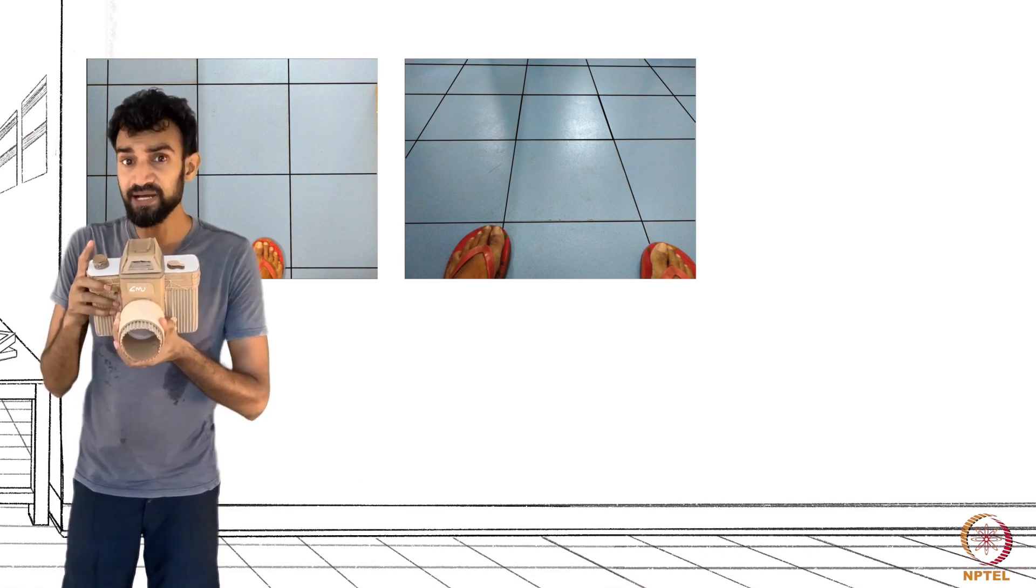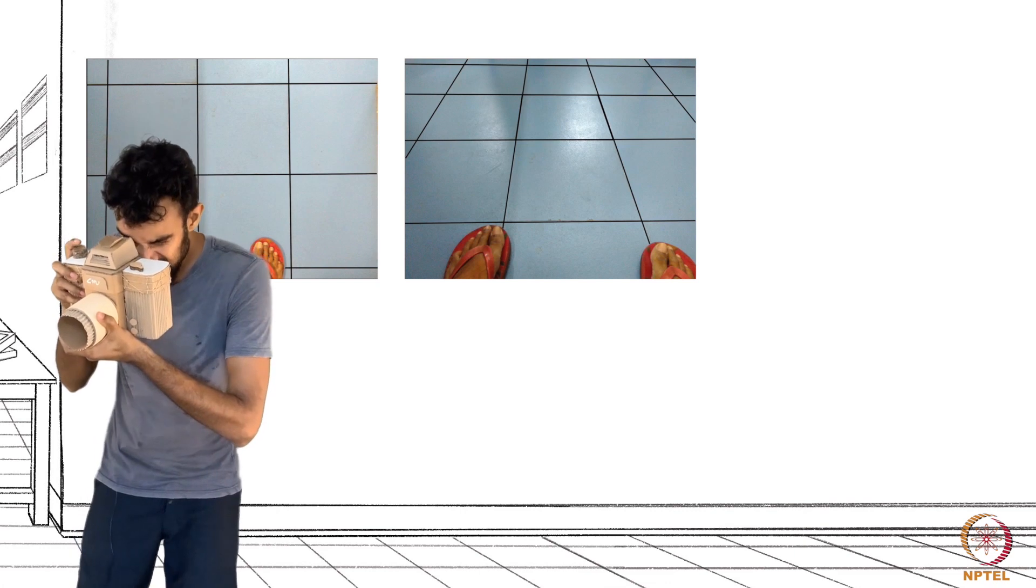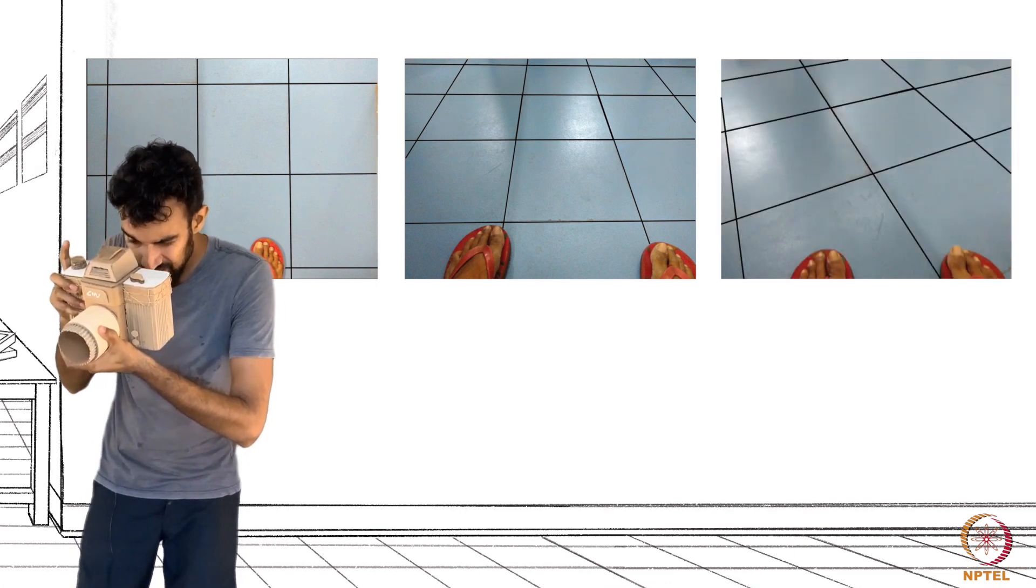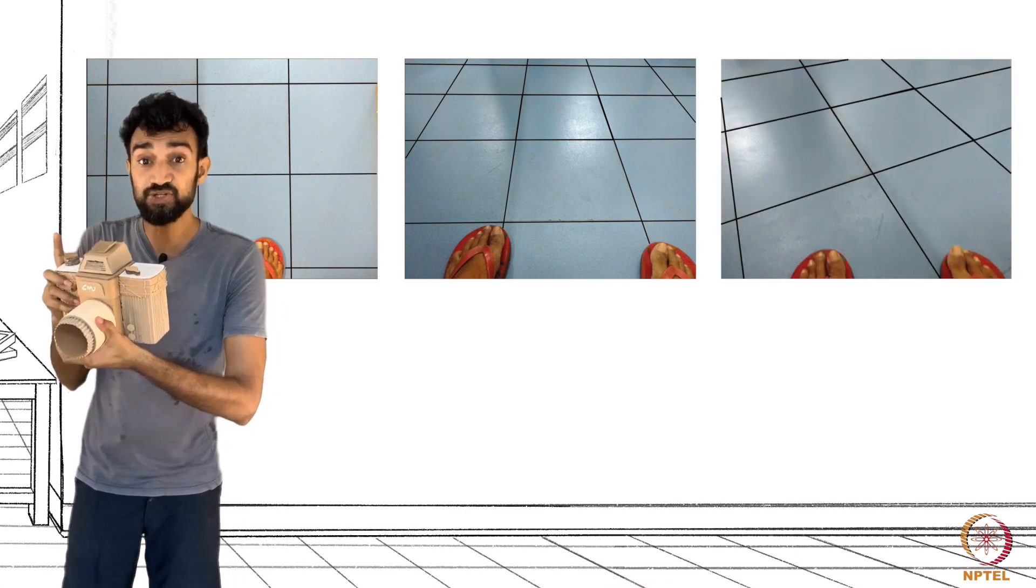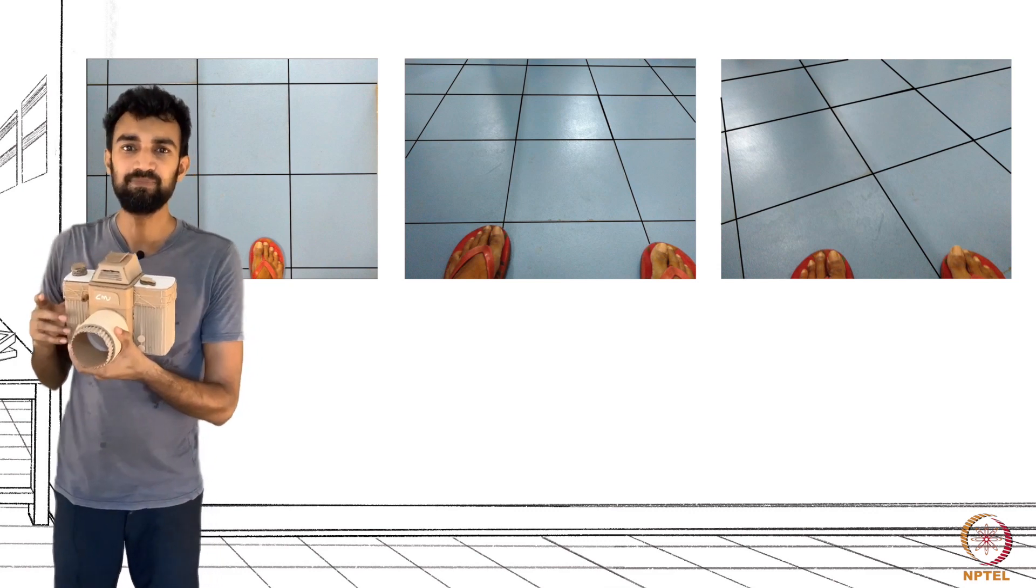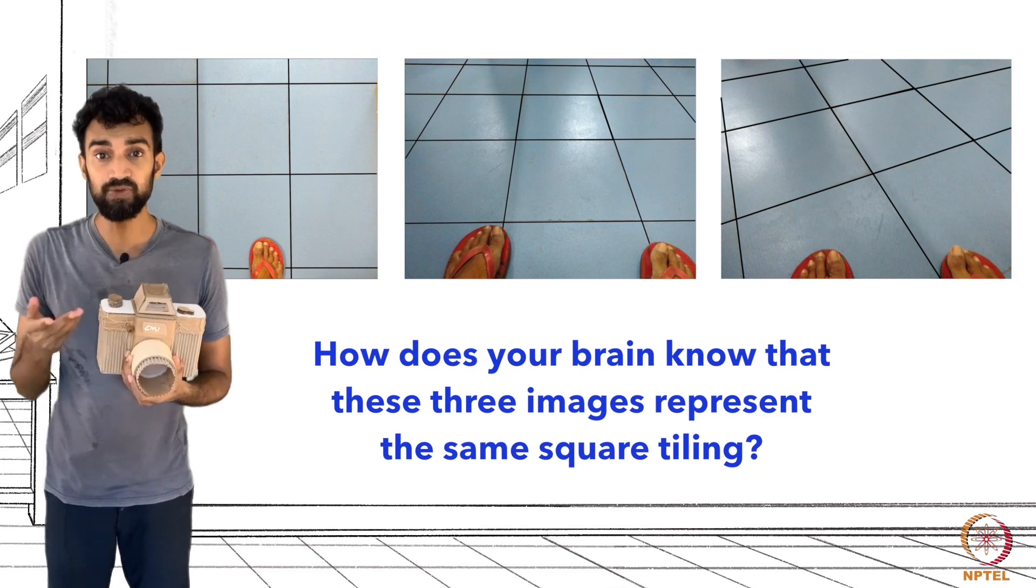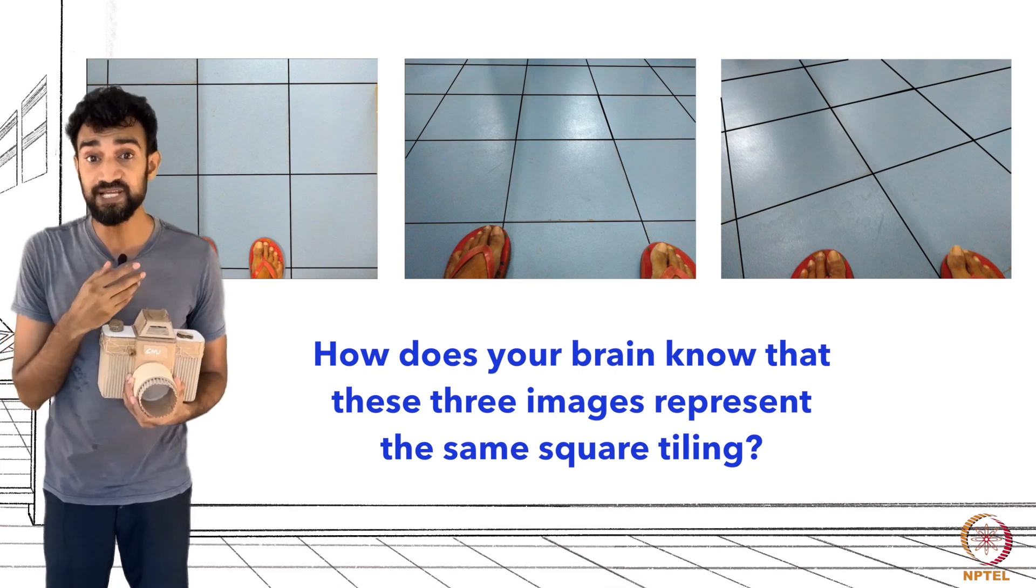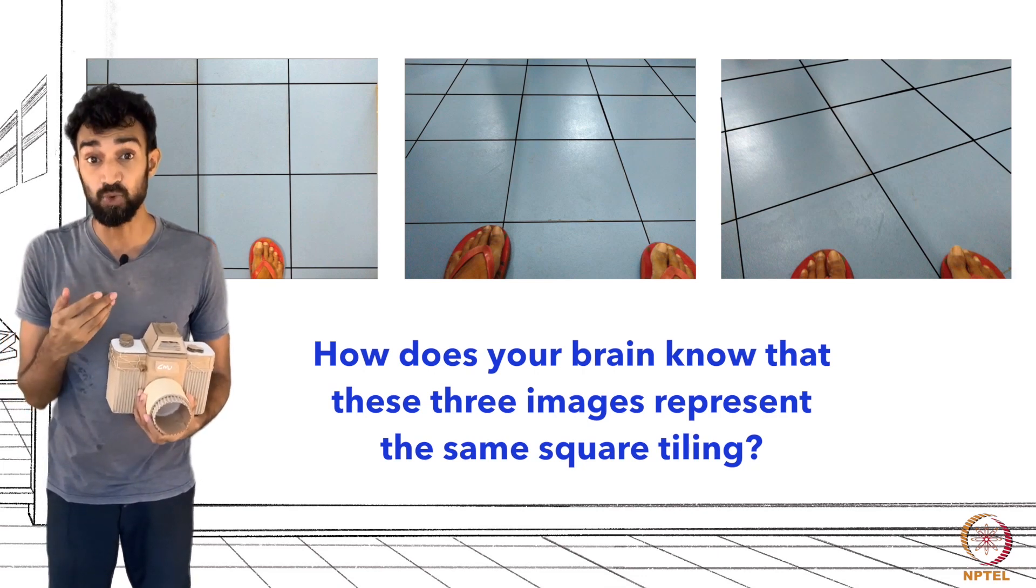Now, if I turn my head slightly, the picture changes significantly once again. There are no more parallel lines. But how does our brain know that these three images represent the same evenly spaced square tiling?